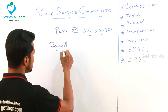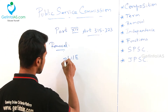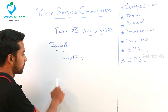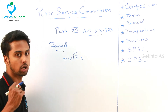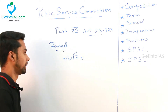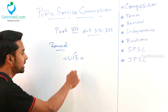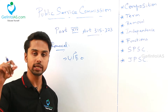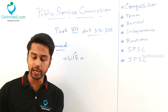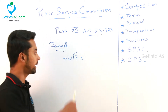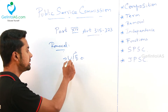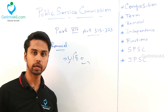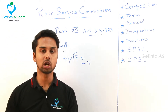Next we will go to the removal. With respect to removal, the grounds are U, I, E. U means unfit — if on the opinion of the president he is unfit. I means insolvent — if he is a declared insolvent. E means engages — if he is engaging in any other office which is giving payment during the tenure of his office, or engaging in some private trade which gives him money. In these three grounds, the president can remove the chairman or the members of UPSC.